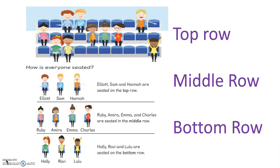Let's have a look at a problem the children will be solving: how is everyone seated? Here we have Elliot, Sam, and Hannah, and we would say that they are seated on the top row of the cinema. Ruby, Amira, Emma, and Charles are seated on the middle row of the cinema.